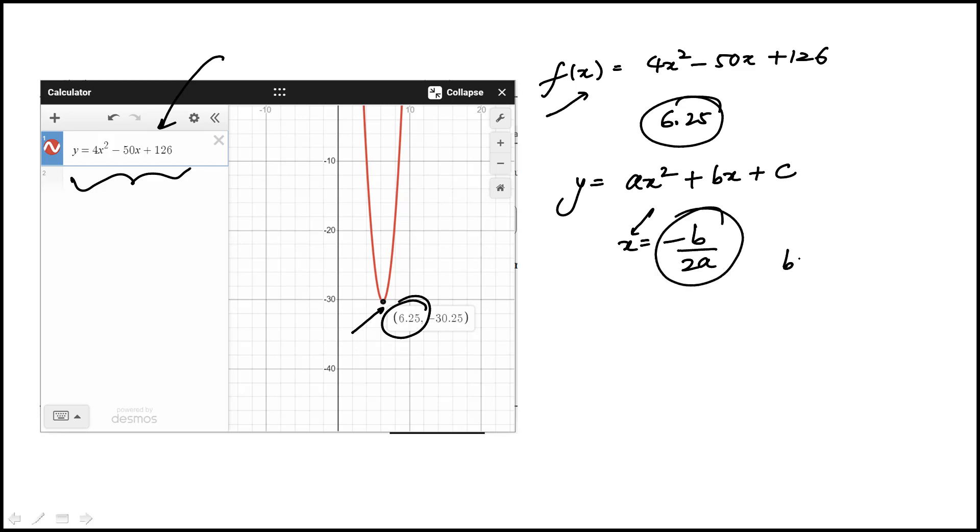And here, you'll note b is minus 50 and a is 4. So if we plug that in here, minus minus 50 over 2 times 4, which is 50 over 8, or 25 over 4, which is 6 and a quarter, or 6.25.